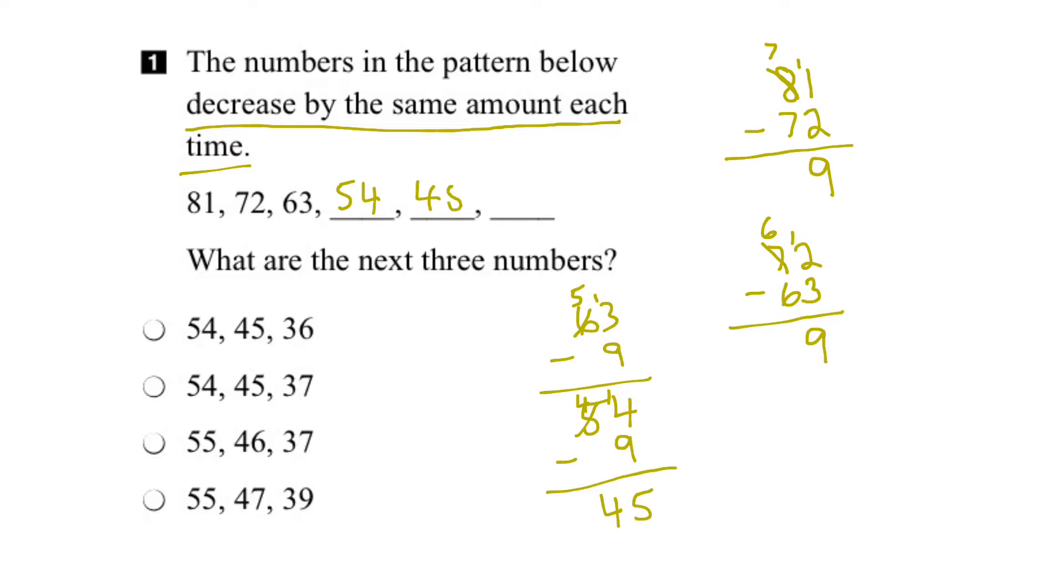And finally, take the 45 and subtract 9. Again, we're going to borrow. So that becomes 15. So 15 minus 9 is 6. And 3 minus 0 there is 3. So the next number here is 36.